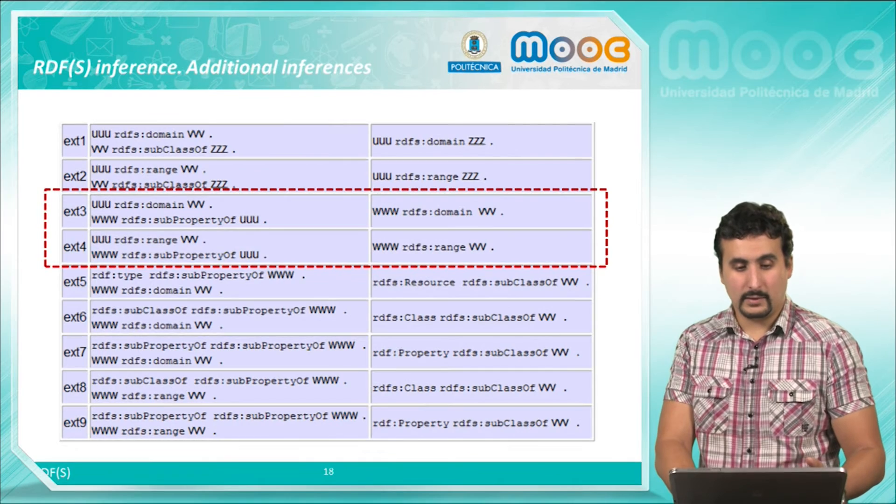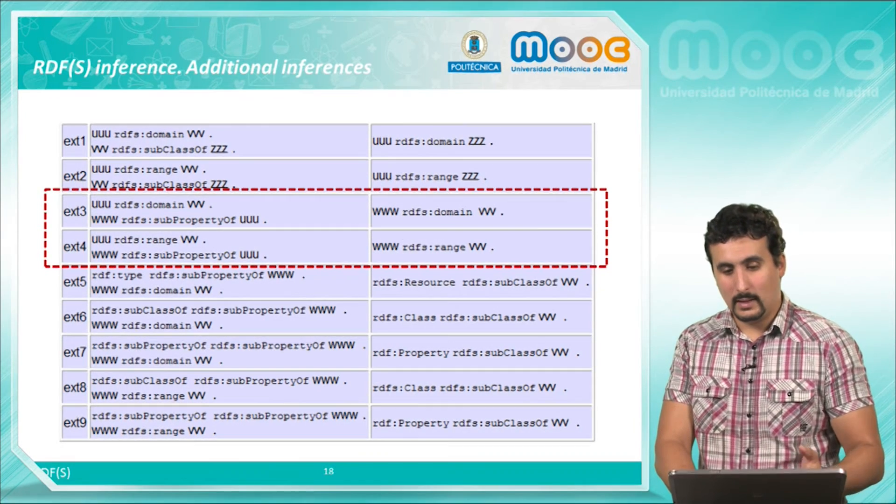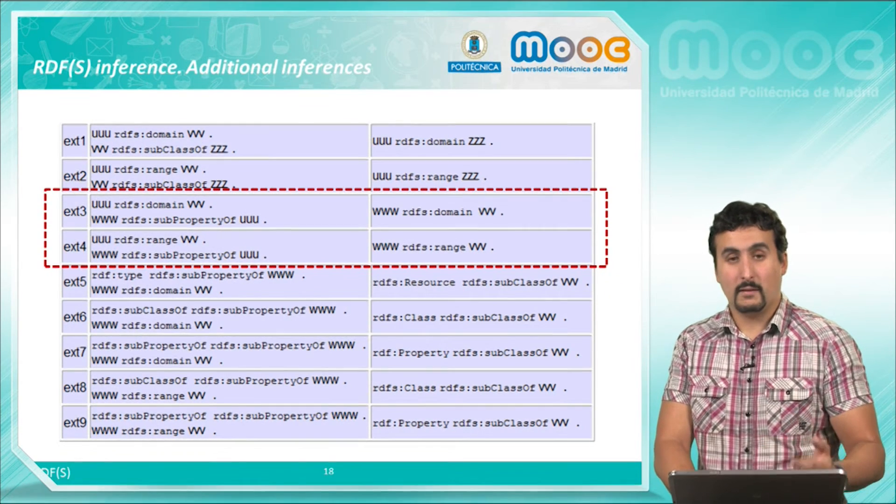if U has a RDFS domain V and W is a subproperty of U, then W has an RDF domain V.